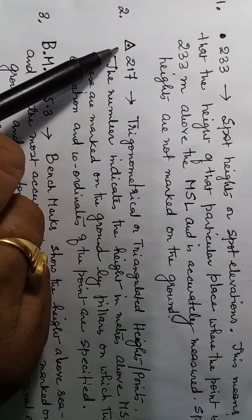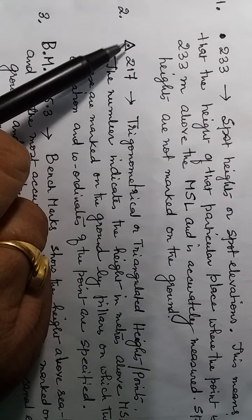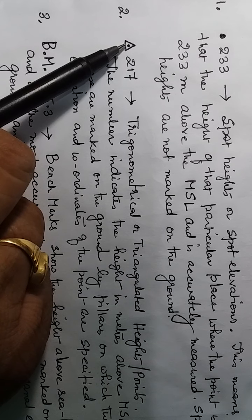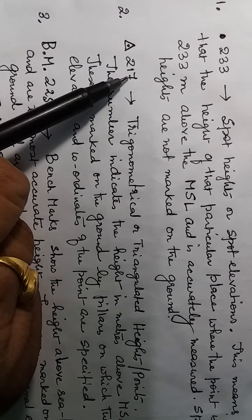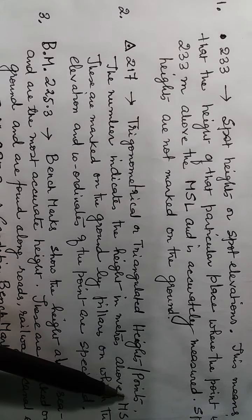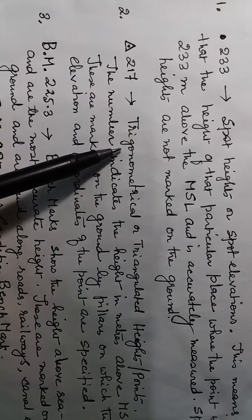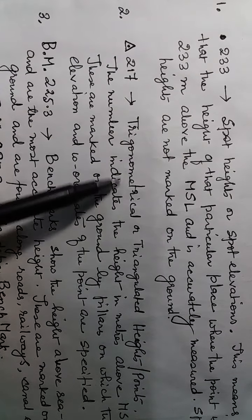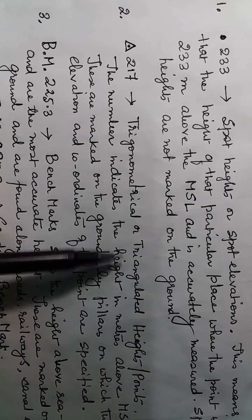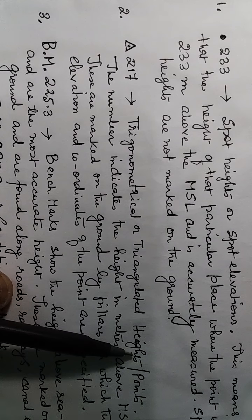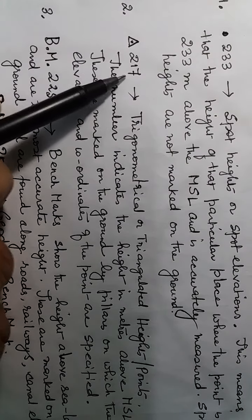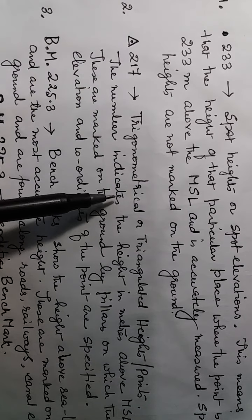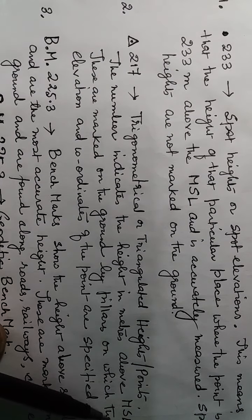You can see a black triangle with a dot and the number 217. This stands for trigonometrical or triangulated heights or points — we may call them trigonometrical stations or triangulated stations. The number 217 indicates the height in meters above mean sea level.